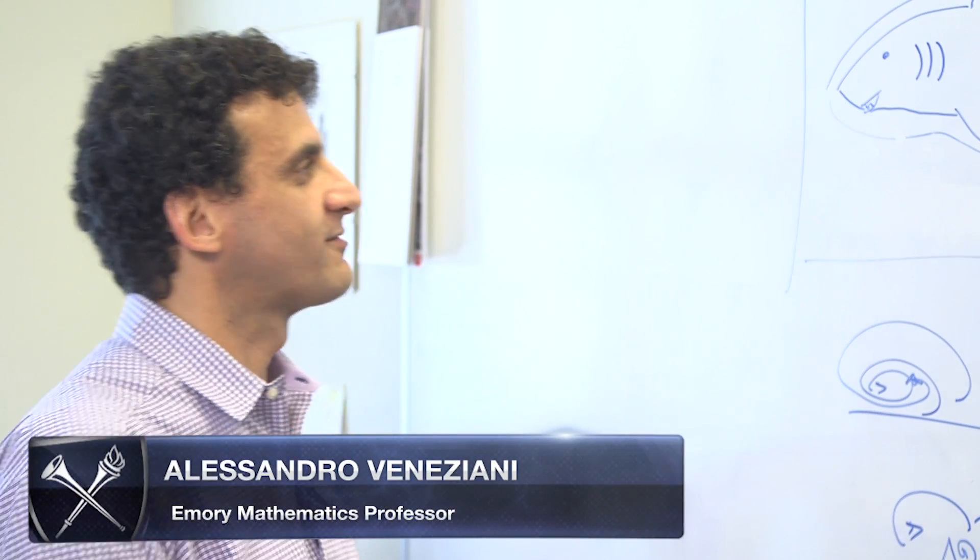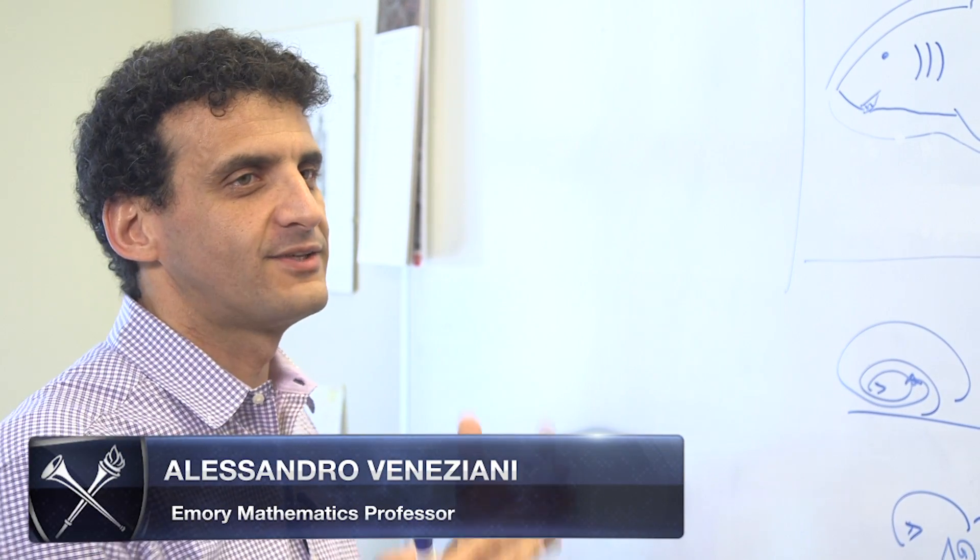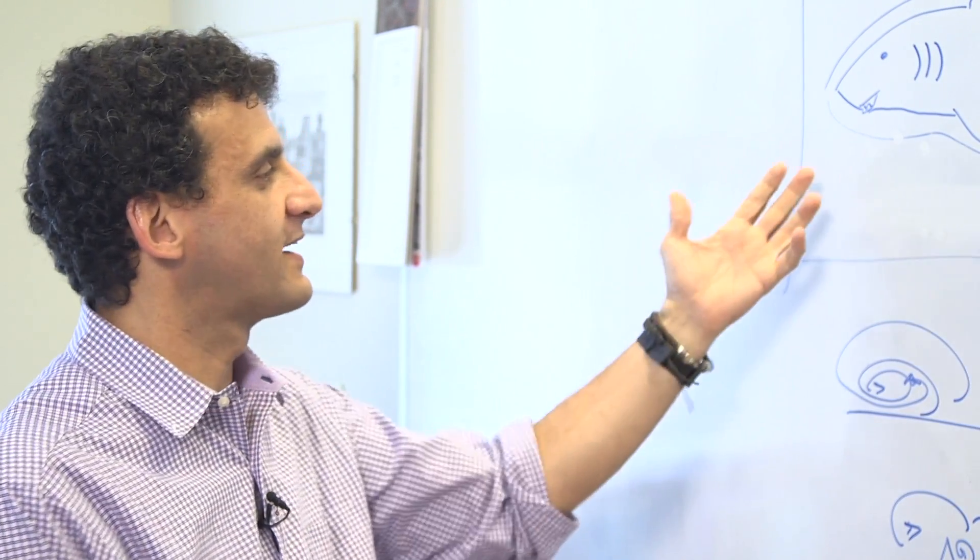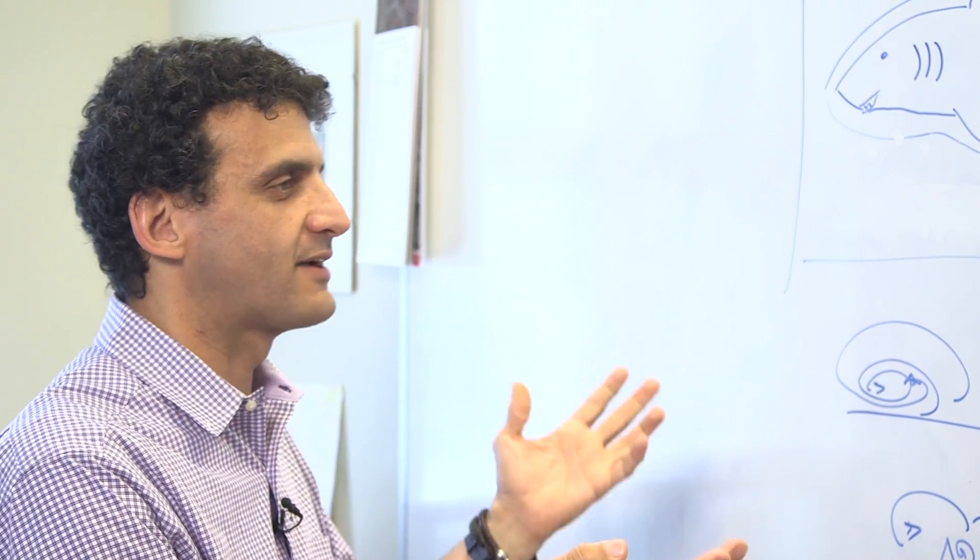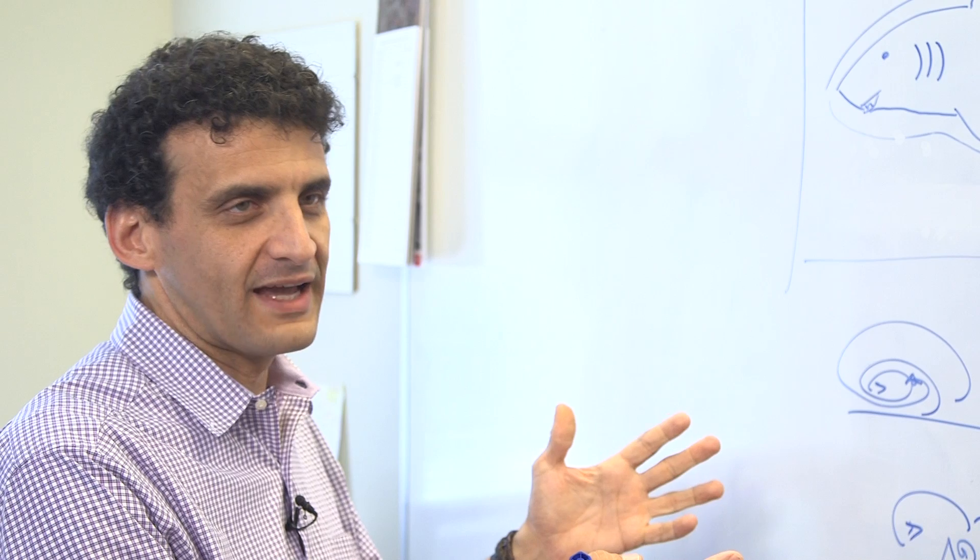One of the most important things about mathematics is that you can do experience in one field like shark skins and then use this experience in completely different fields like motorcycles or blood dynamics.